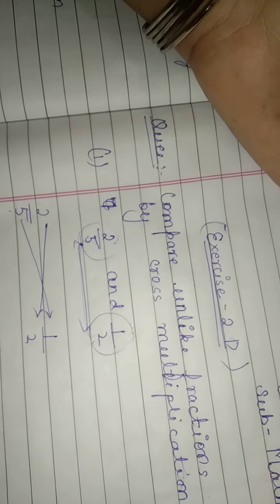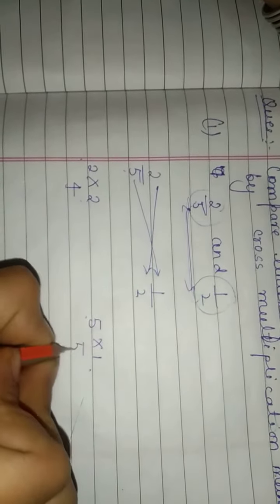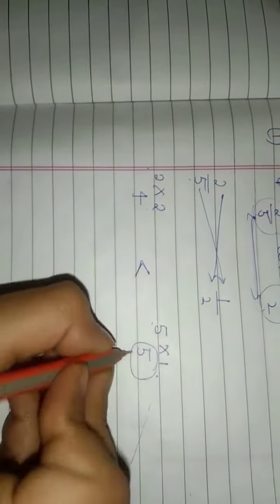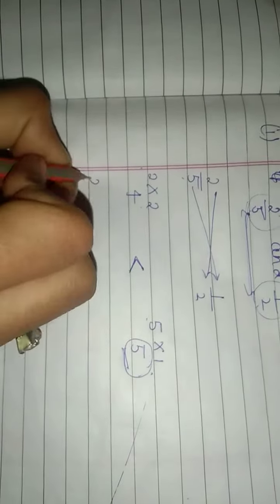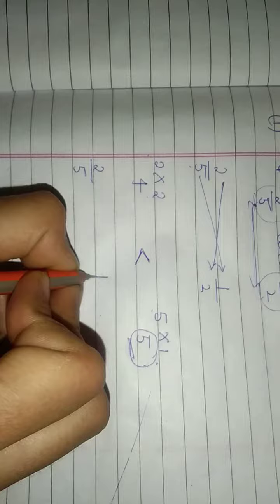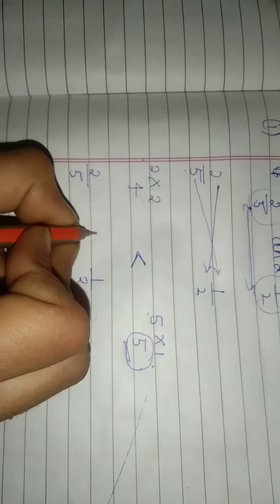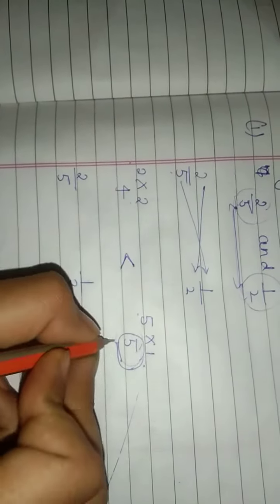So here is 2 multiplied by 2, and here is 5 multiplied by 1. 2 twos are 4, and 5 ones are 5. So which one is greater? 5 is greater, which means the right hand side number is greater. The left hand side number is 2 upon 5 and the right hand side number is 1 upon 2, so 1 upon 2 is greater.